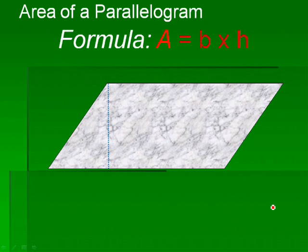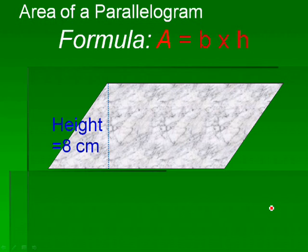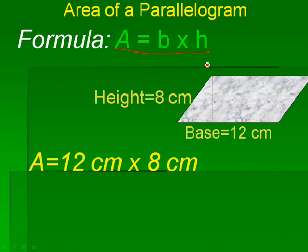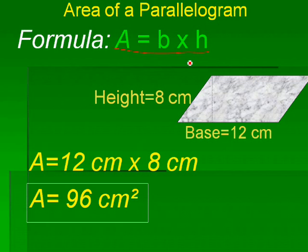Find the area of the parallelogram using the formula A equals B times H. Height equals 8 centimeters, base equals 12 centimeters. Area equals 12 centimeters times 8 centimeters. Area equals 96 square centimeters.